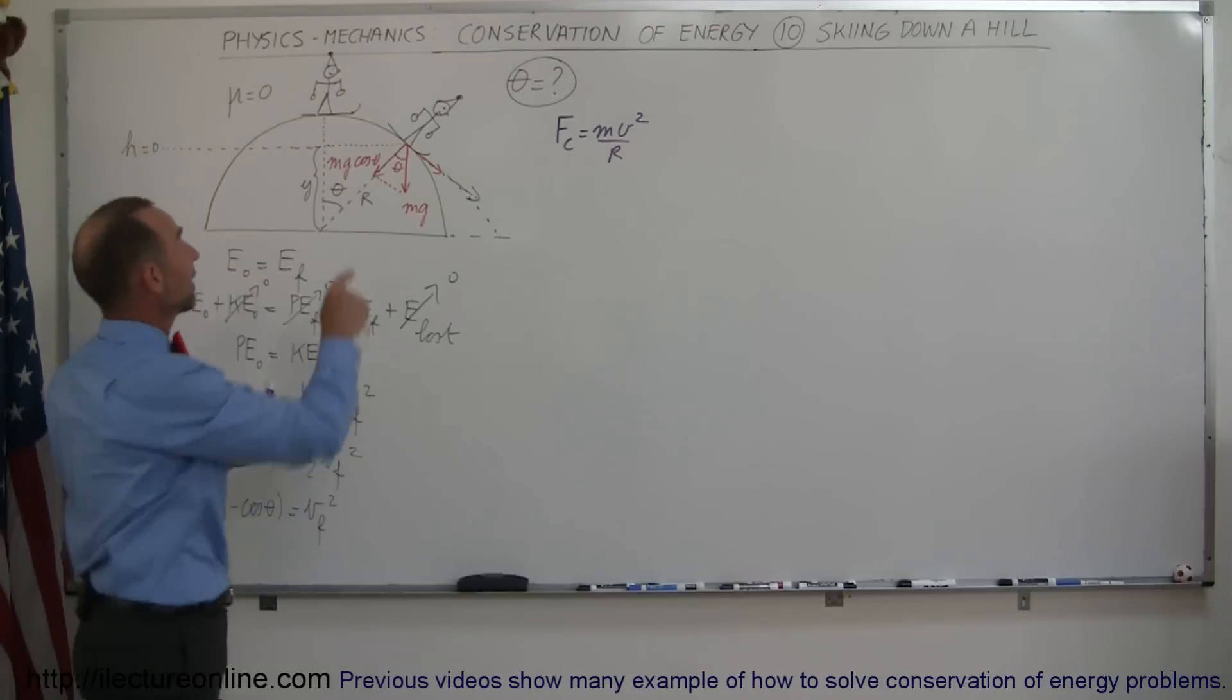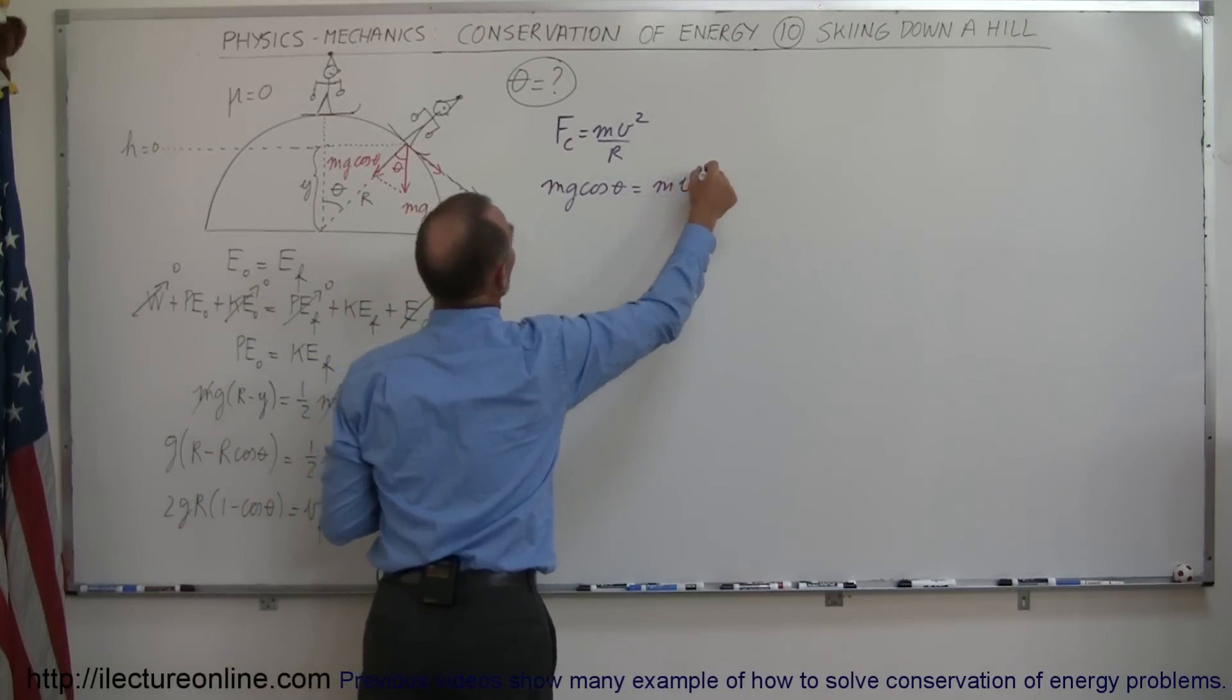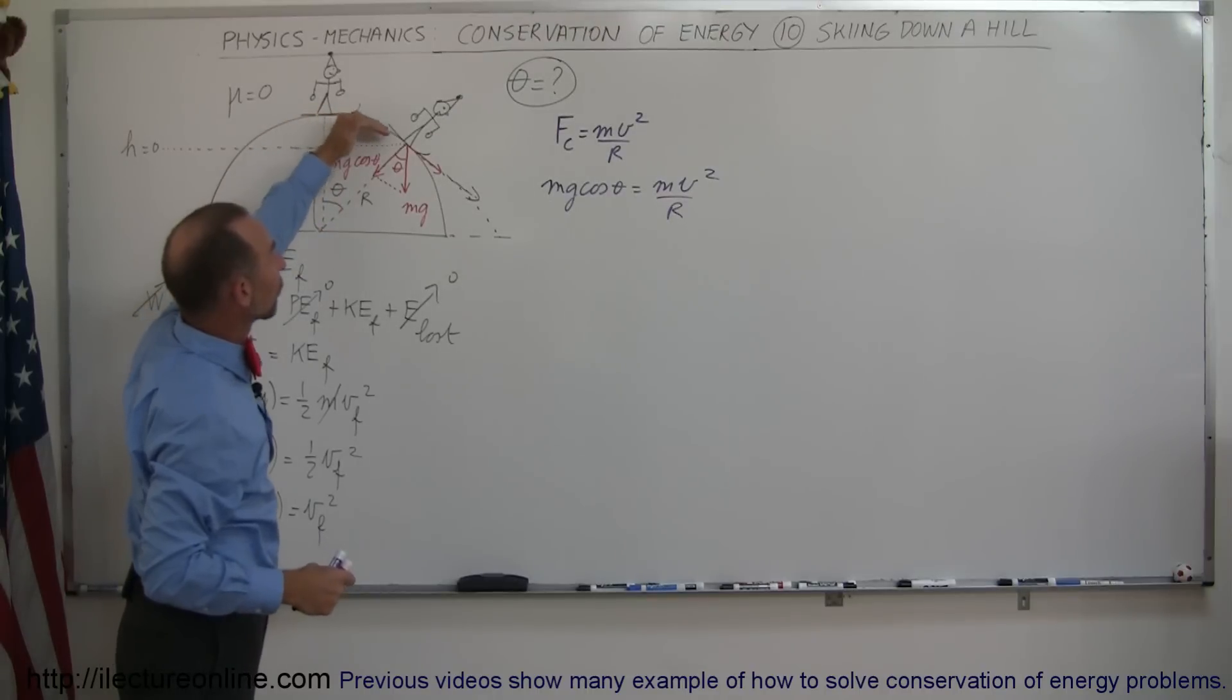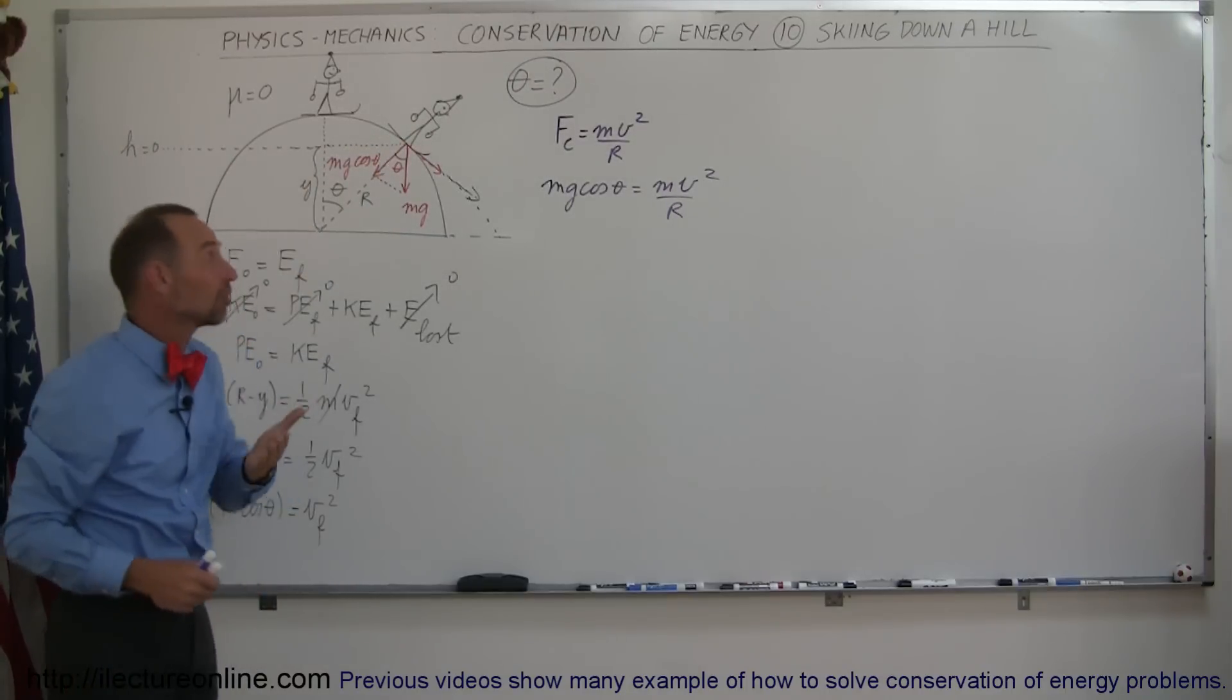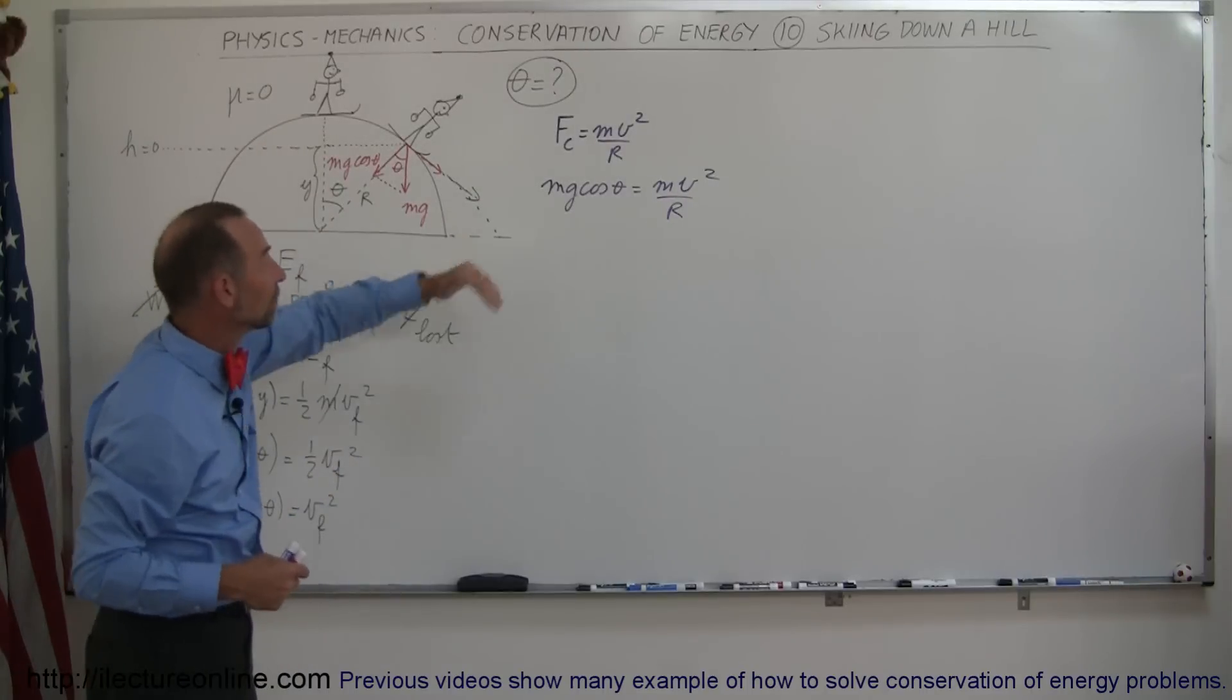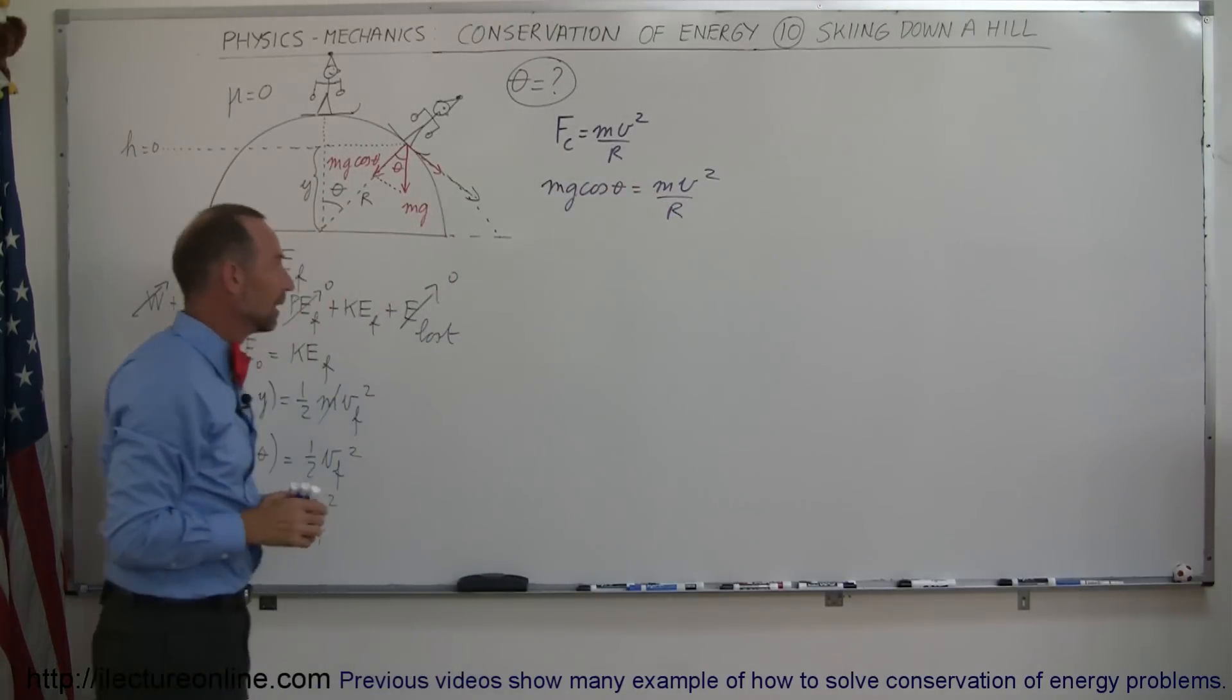Okay, so we set that equal to this quantity right here, and what we get then is we get mg cosine theta is equal to m v squared over r. Notice that mg cosine theta is going to get smaller and smaller and smaller as he skis further and further and further down the hill, because the angle gets bigger. When the angle gets bigger, the cosine of theta gets smaller, so eventually the mg cosine theta is not enough to provide the m v squared over r. At that point the skier will leave the hill, so we can set, if we set it equal to each other, that will be the very moment at which the skier leaves the hill.